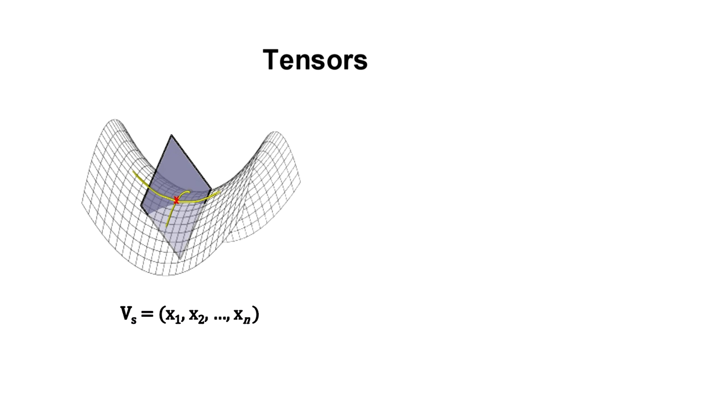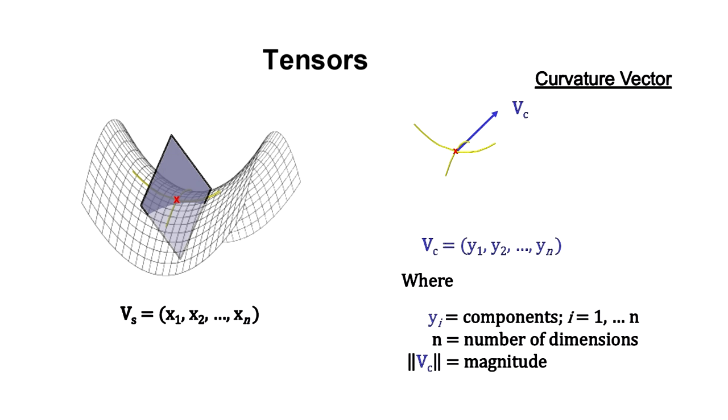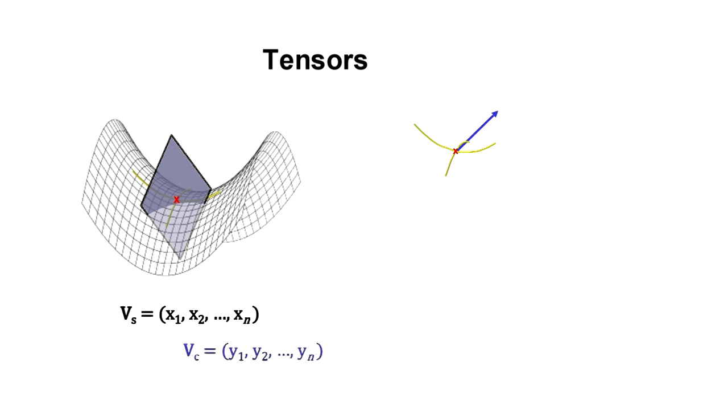And for each surface, we can construct a vector that represents the curvature of the lines through a point on the surface. Multiplying these two vectors creates a mathematical object called a tensor.